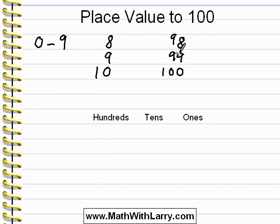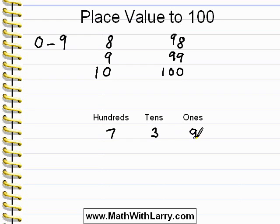It's important to understand what the columns really mean. Let's take a look at the number 739. The ones place is always the column on the right. To the left of that, we have the tens place, and to the left of that, we have the hundreds place. This is the way our system is — it will always be that way.